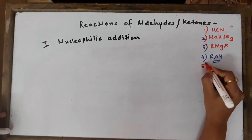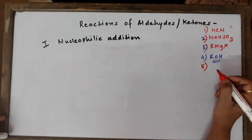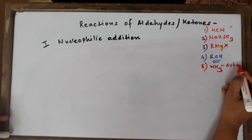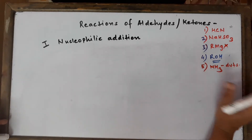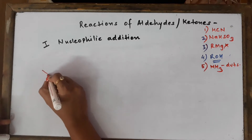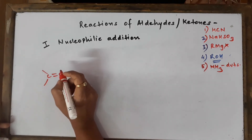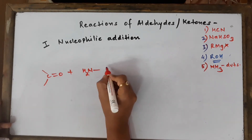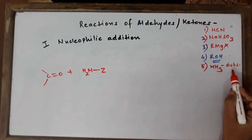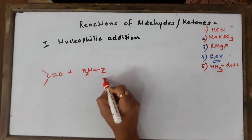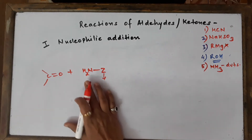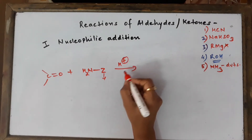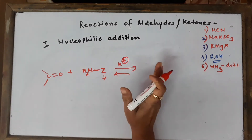Now I'm going to start with the fifth nucleophilic addition reaction, which is the longest of all - ammonia and its derivatives. This is very important for your board exam and practicals as well. The reactions are extremely simple and easy. We are going to take ammonia, NH3, and write NH2-Z, where Z represents various substituents attached to NH2. This reaction is catalyzed in the presence of HCl or any acid, and it's a reversible reaction.